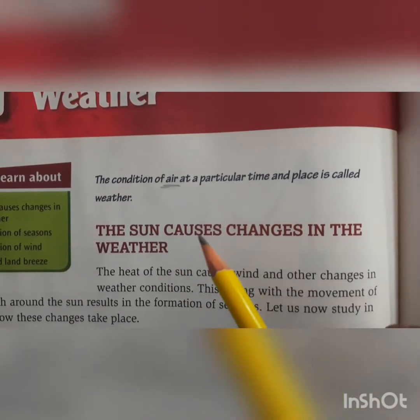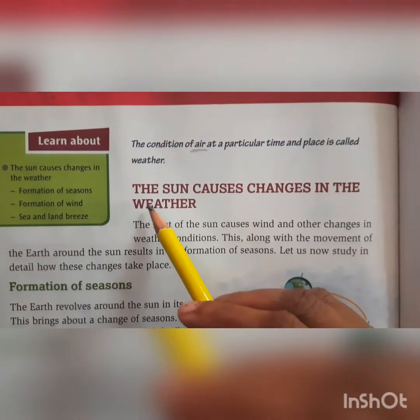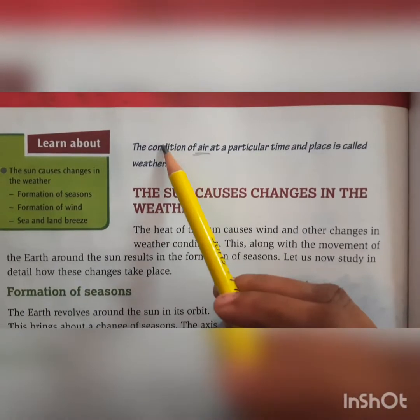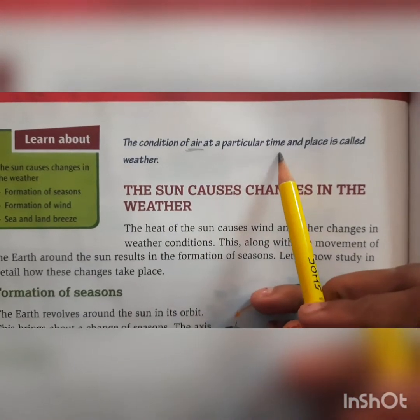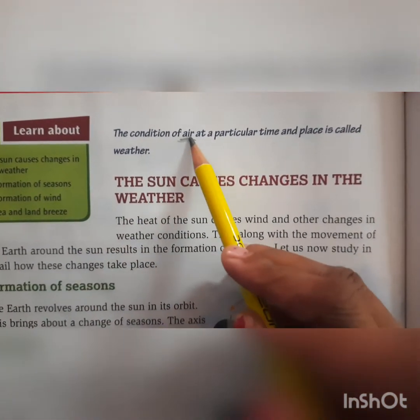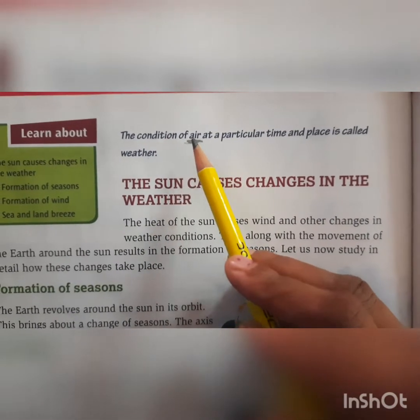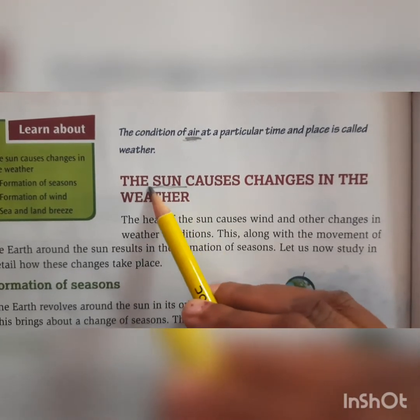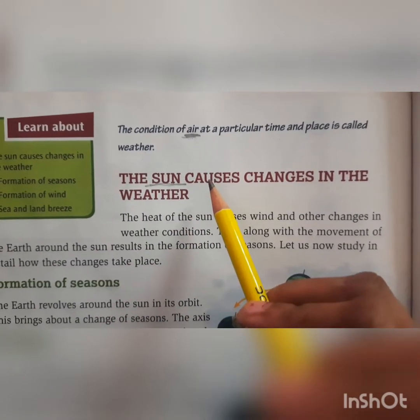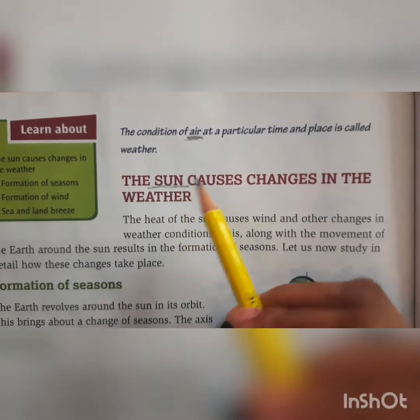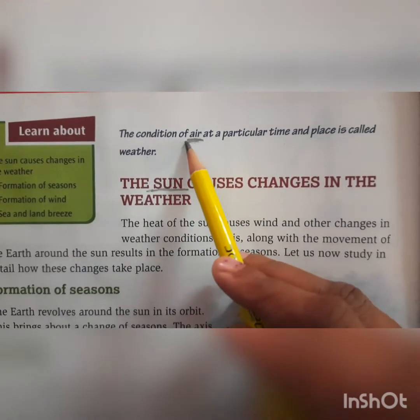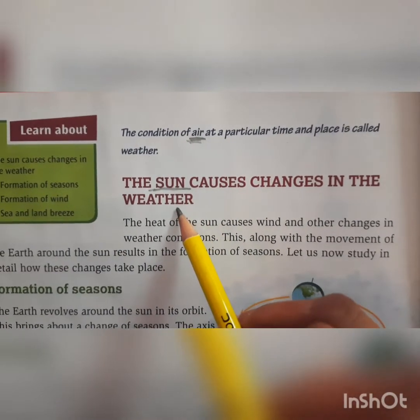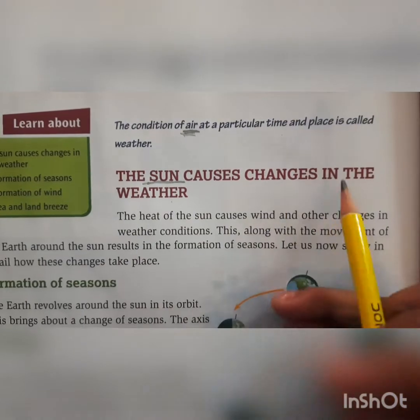How's the weather these days? The weather is cold. Now let's start — the sun causes changes in the weather. The condition of air at a particular time and place is called weather. Who changes the air? The sun. These days the sun is rising late, so the mornings and evenings are colder. Because of the sun, the air is changing, and this is causing the change in the weather. The sun causes changes in the weather.